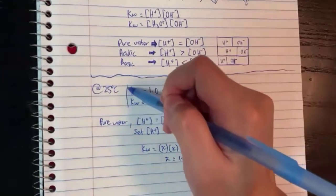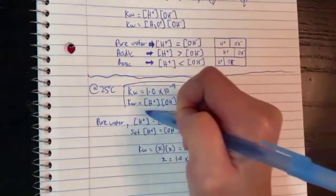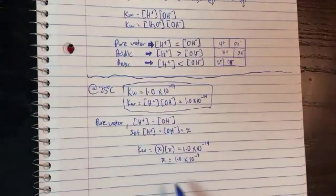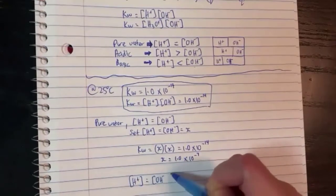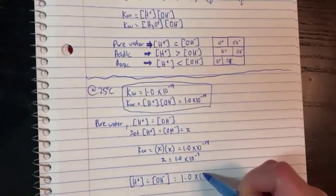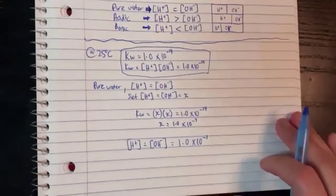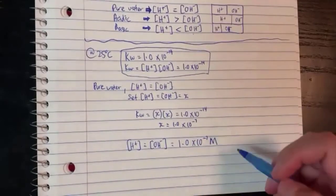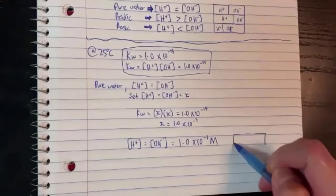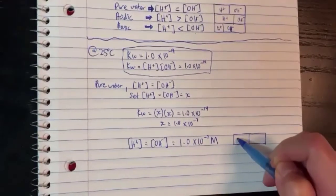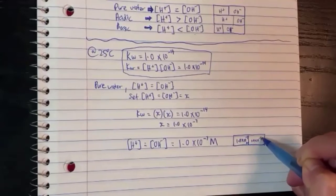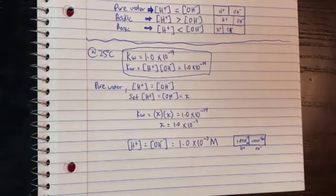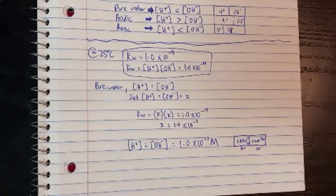This is true for anything at 25 degrees. For pure water at 25 degrees, H⁺ and OH⁻ are the same value. We know the value for 25 degrees is 1.0×10⁻⁷ molarity. If I were to draw it out, it would be half and half — both of them are 1.0×10⁻⁷ molarity. This is H⁺, and that's OH⁻; they're equal because it's pure water at 25 degrees.